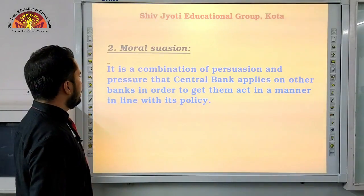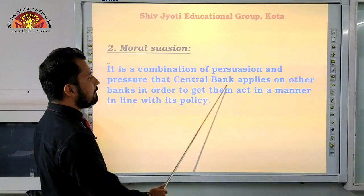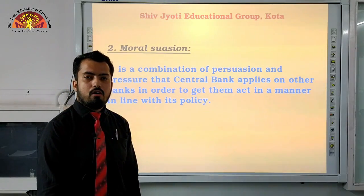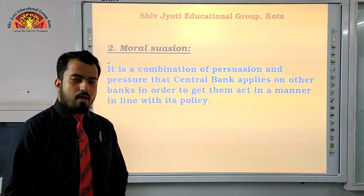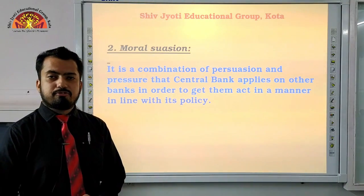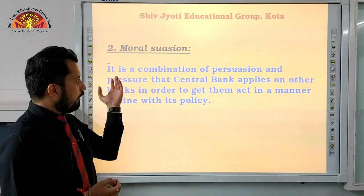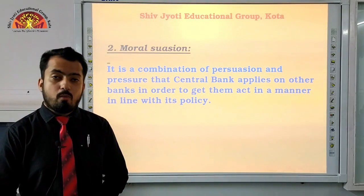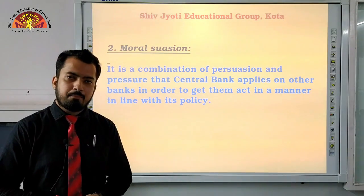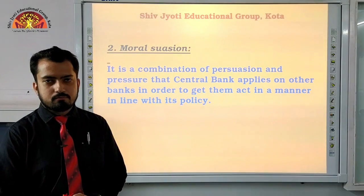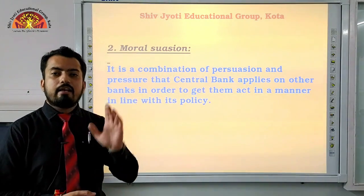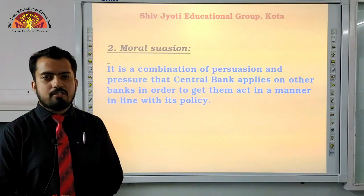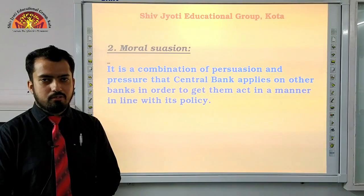Point number two is Moral Suasion — it is a combination of persuasion and pressure that the central bank applies on other banks in order to get them to act in line with its policy. Since the central bank is the apex authority controlling all other commercial banks and financial institutions, it provides legal guidelines for their functioning. If any financial institution or bank does not follow these policies, the central bank can take legal action against them.